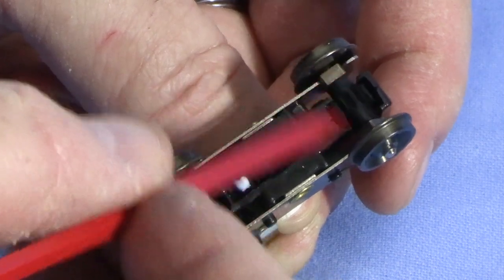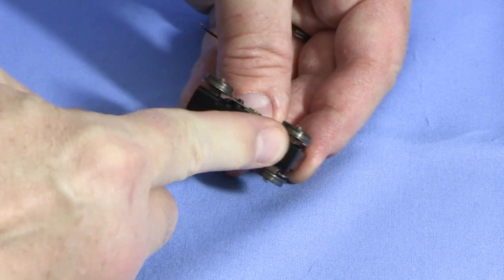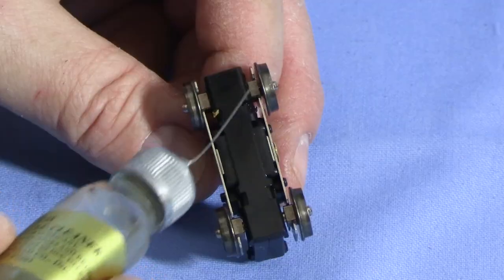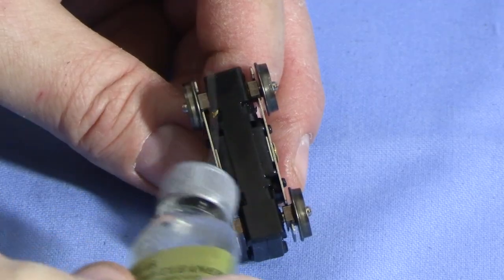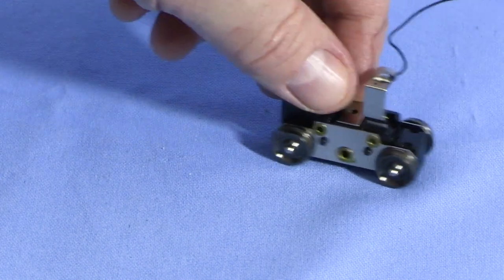The square bearings need to be rotated until they fall into the axle slots. I'll reattach the bottom cover. This is some Atlas Conduct-A-Lube, a plastic compatible conductive oil. I'll put a tiny drop of this on each of the axle bearings. Now the truck should roll freely. If there's any stiffness, something is wrong.